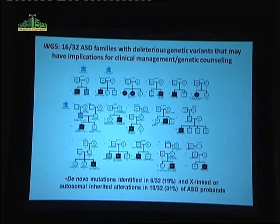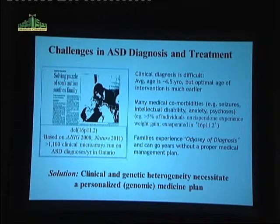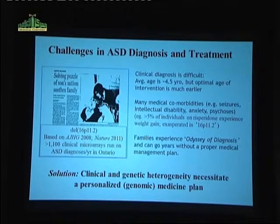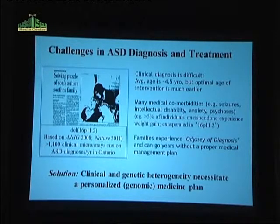I'll go through three examples highlighted with the puzzle piece. In Toronto, the average age of diagnosis of a child with autism is about 4.5 or 5 years old, and that varies from region to region. To have optimal intervention, you need to start much earlier than that — ideally at the same time of diagnosis.